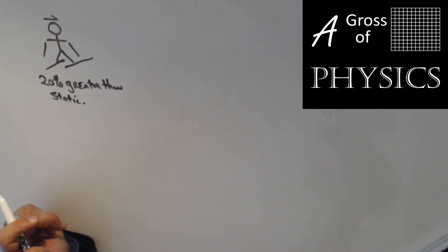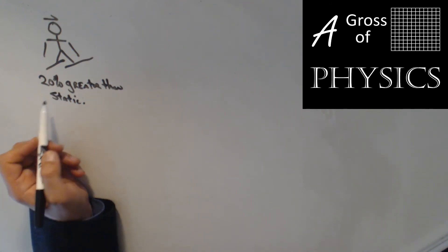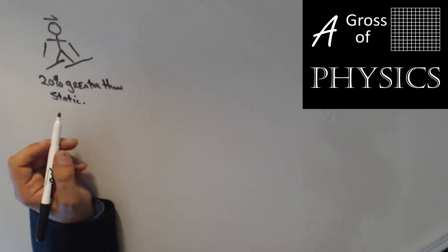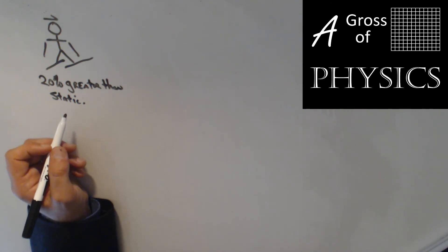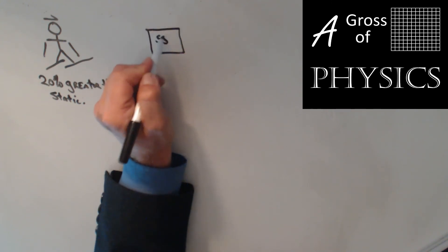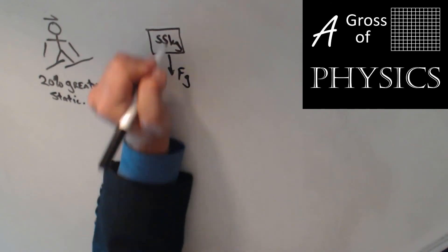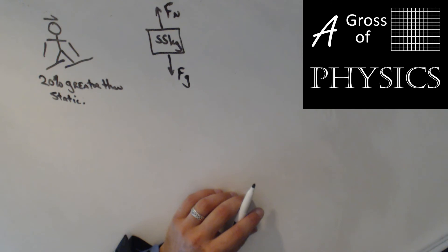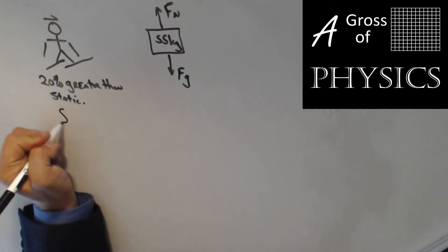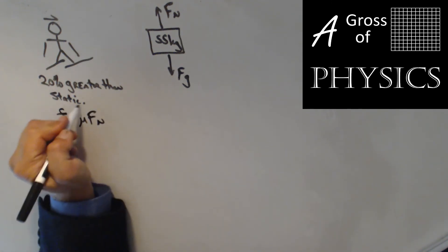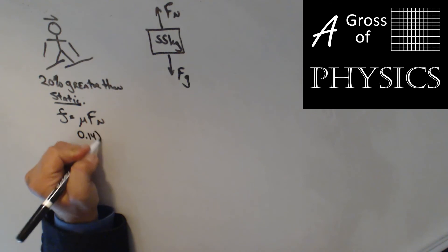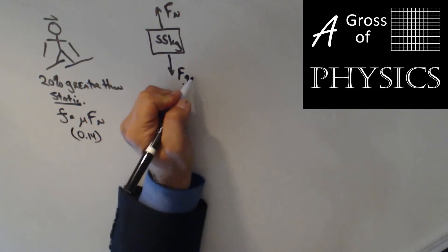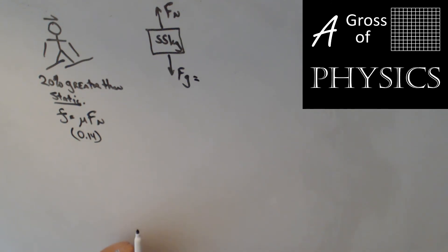Now let's try a problem involving static friction. We have a cross-country skier who will apply a force 20% greater than the static friction limit to start the race, and we need to determine their acceleration at that point. The skier has a mass of 55 kilograms. Drawing a free body diagram with gravity and the normal force, I want to find the maximum static friction using wax ski on snow, which has a static coefficient of 0.14.